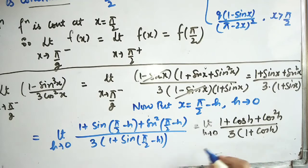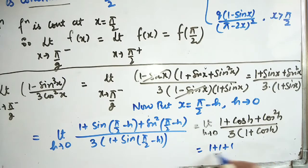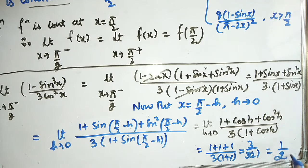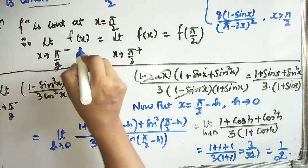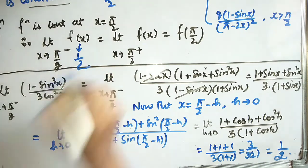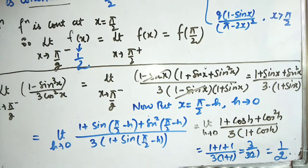So we get (1 + 1 + 1) / (3 × (1 + 1)) = 3/6 = 1/2. Therefore the left-hand limit is 1/2. Now we will take the right-hand limit.